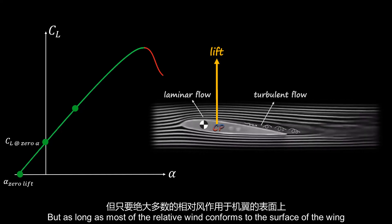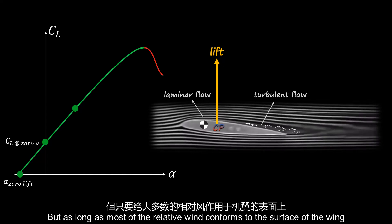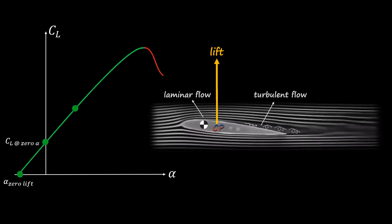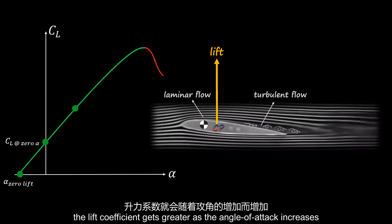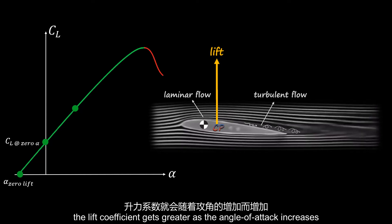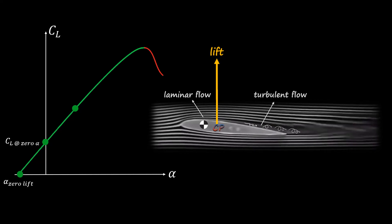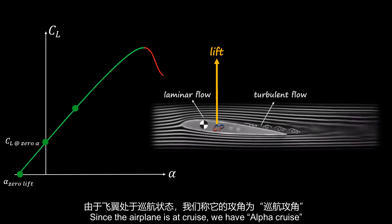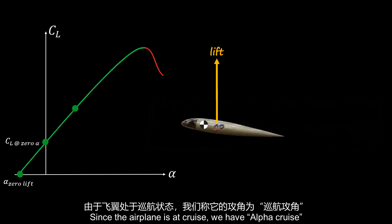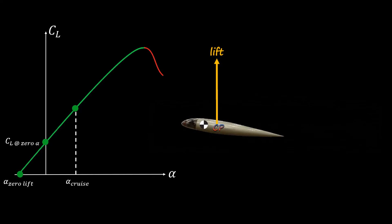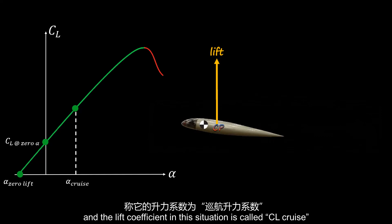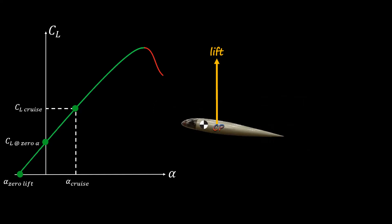But as long as most of the relative wind conforms to the surface of the wing, the lift coefficient gets greater as the angle of attack increases. Since the airplane is at cruise, we have alpha cruise, and the lift coefficient in this situation is called CL cruise.